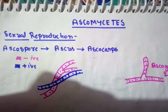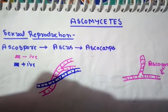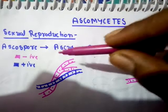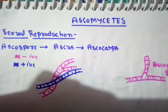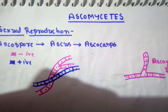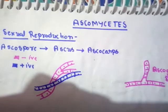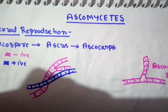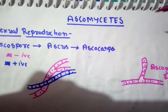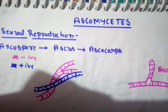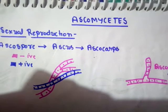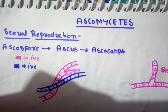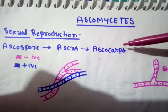The name of the class is Ascomycetes. The sexual reproduction in Ascomycetes is performed with the help of sexual spores, and these sexual spores are called ascospores. Ascospores are produced in a sac-like structure known as ascus. Because the sexual spores are produced in a sac-like structure — the ascus — this class of fungi is also known as sac fungi. In the mycelium of Ascomycetes, these asci are arranged to form different fruiting bodies, and these fruiting bodies that bear asci are called ascocarps.